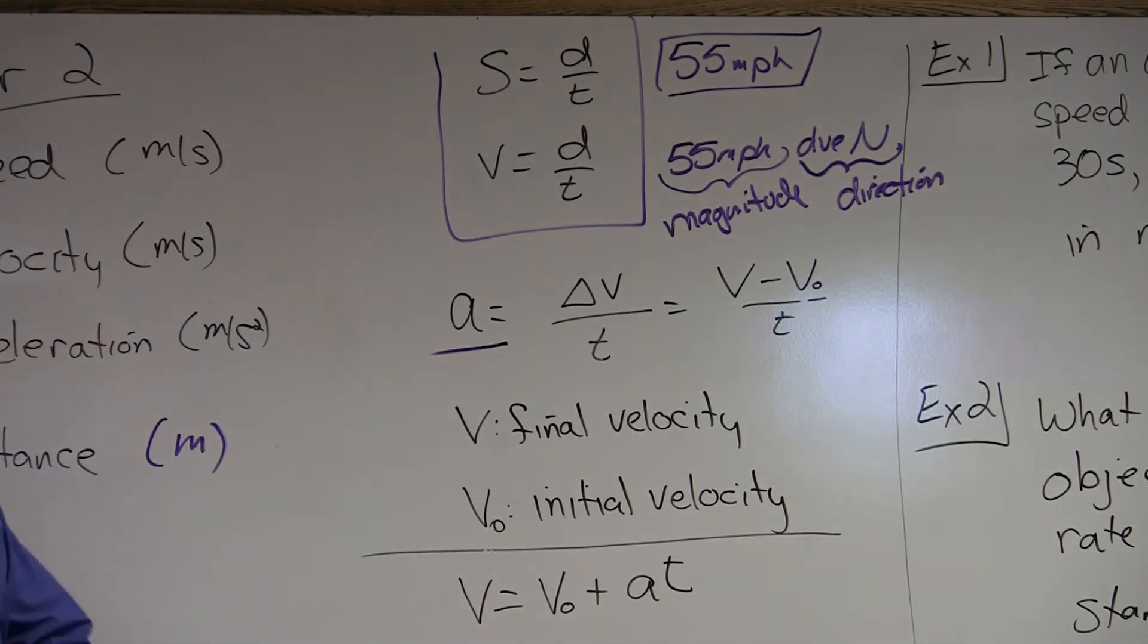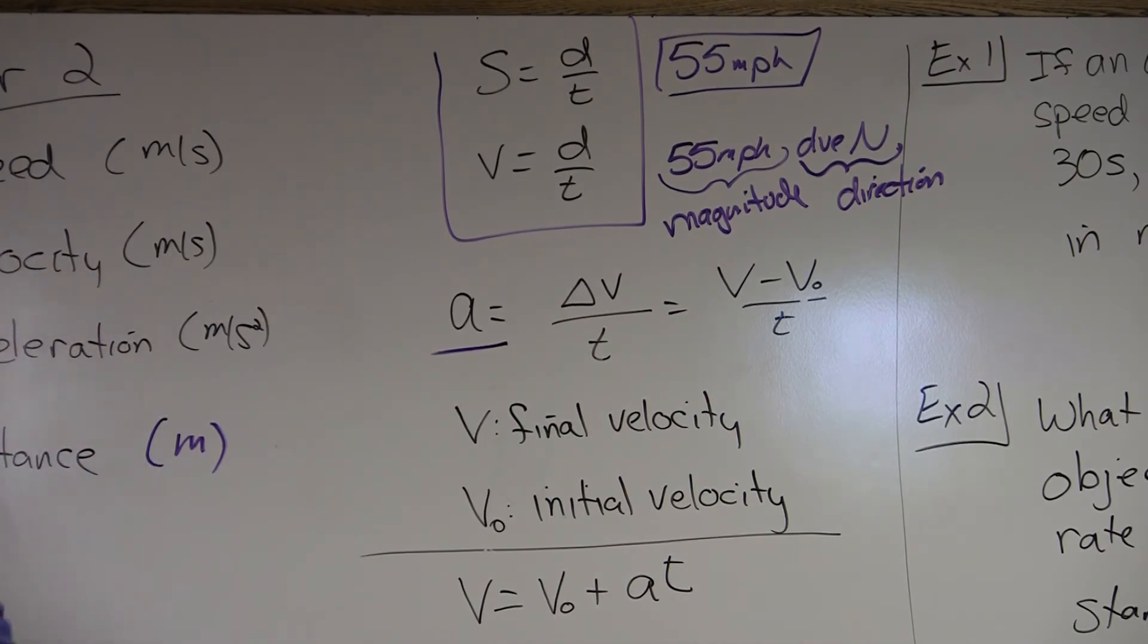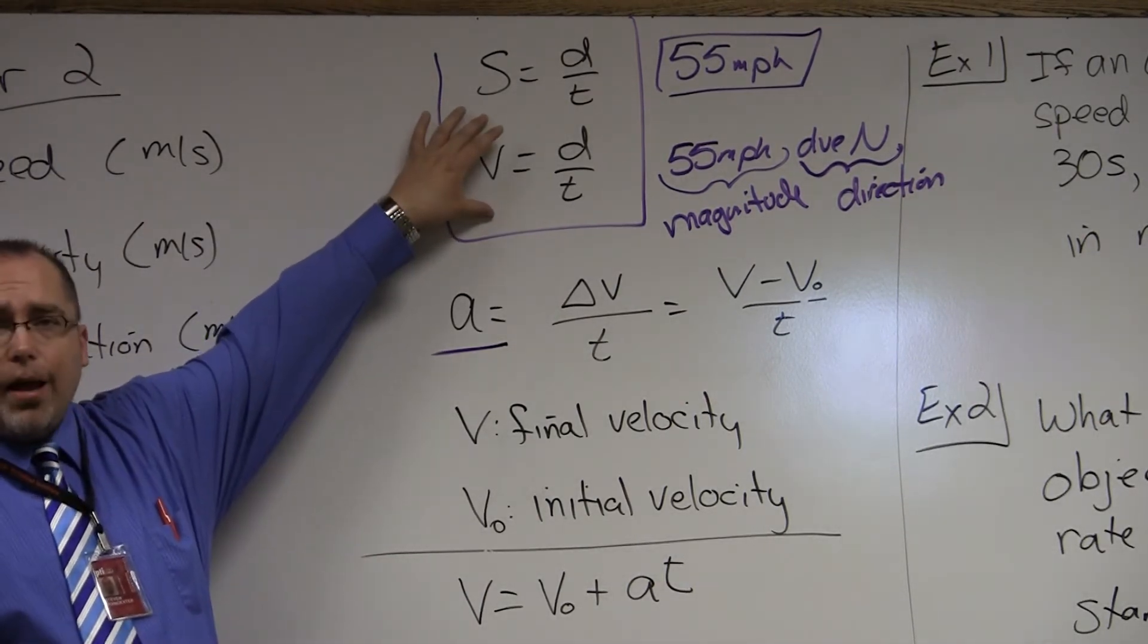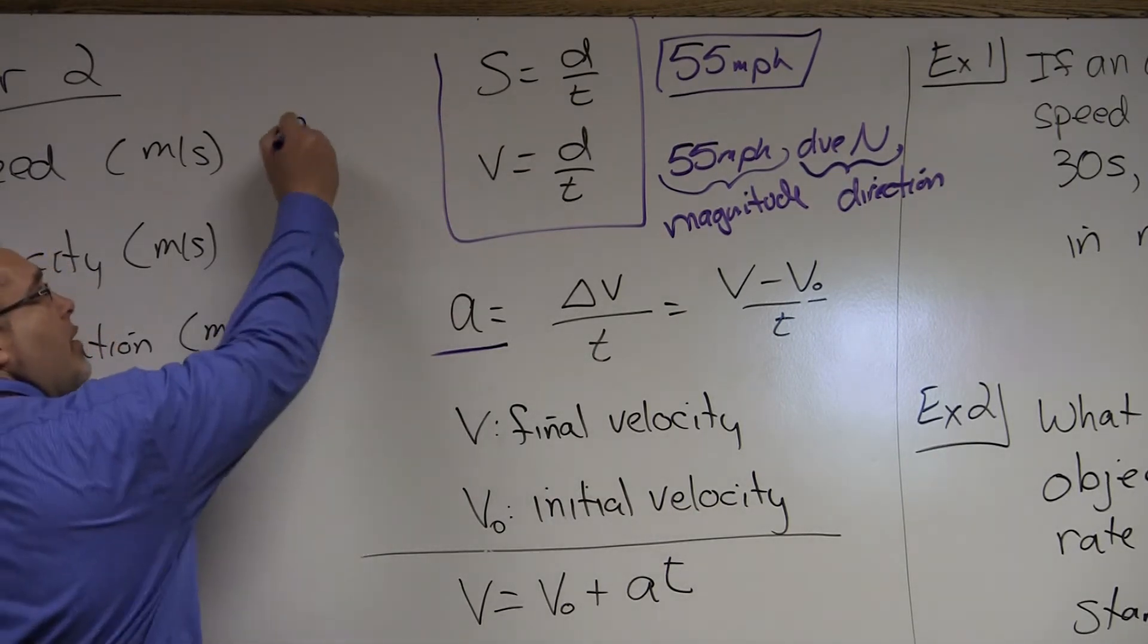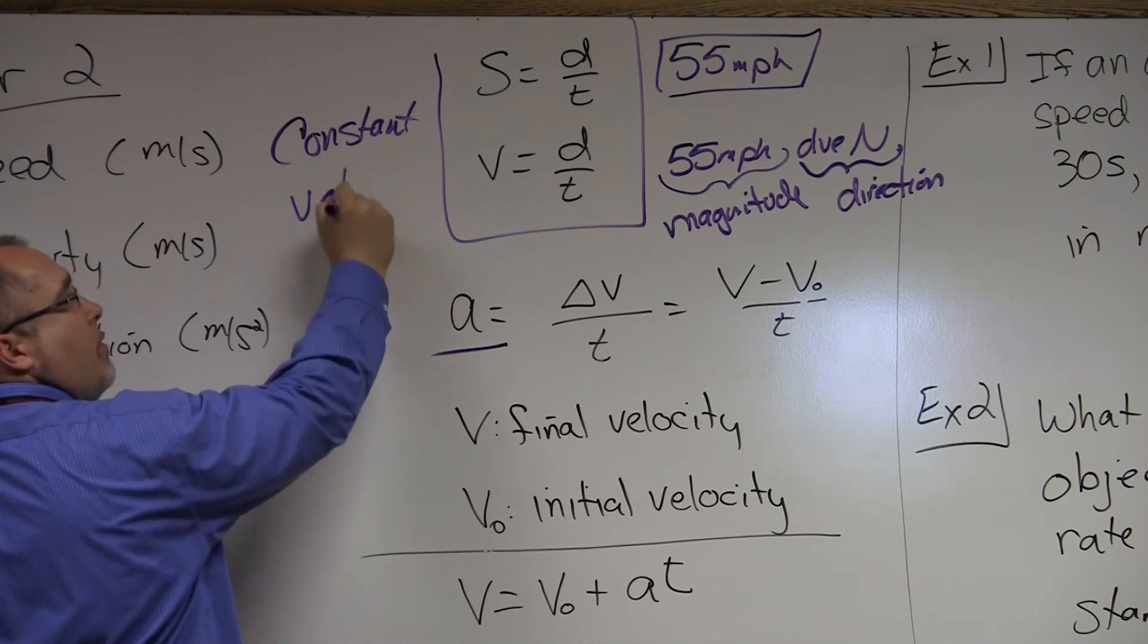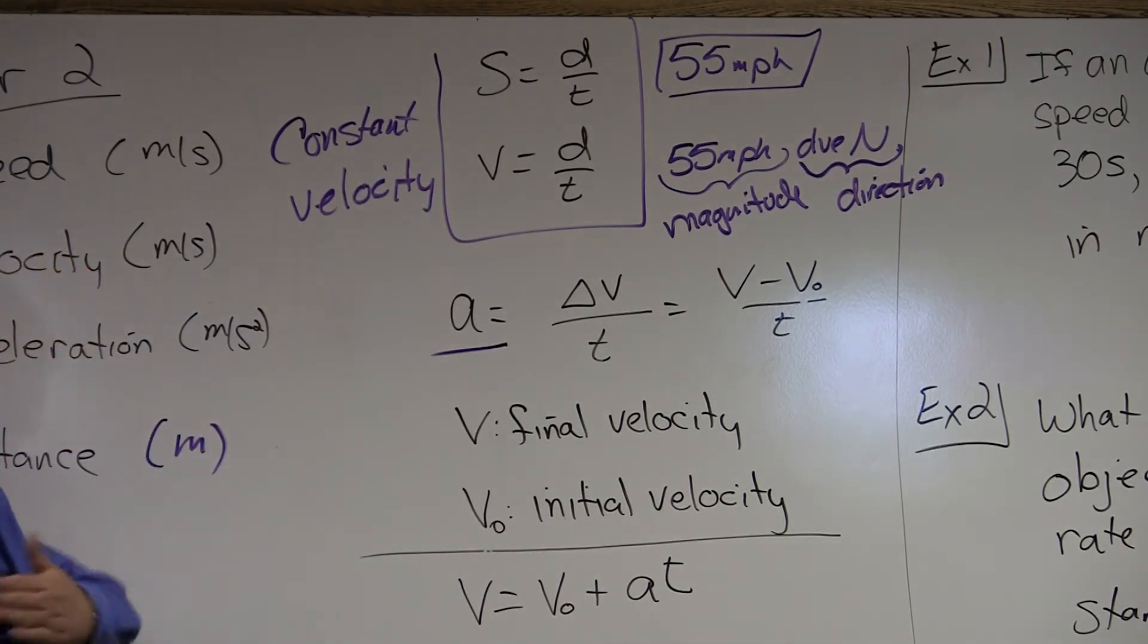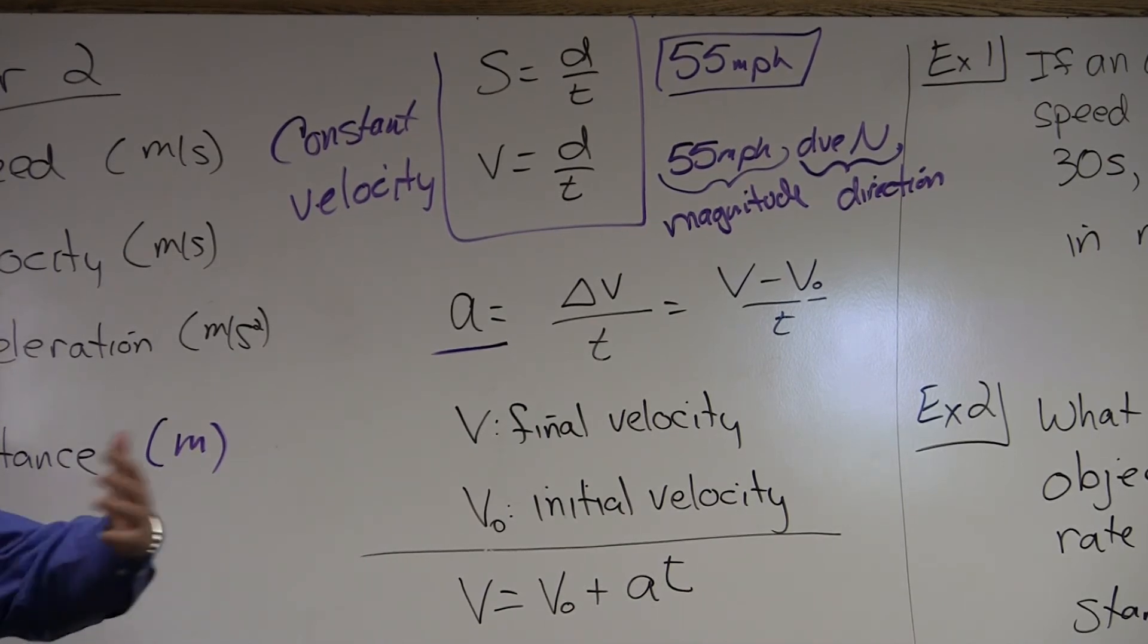When you throw acceleration into the mix, we have a different formula to find velocity. Because these formulas do not account for acceleration. This is with a constant speed or velocity. If it's constant, there's no acceleration because there's no change. The whole definition of constant is unchanging.